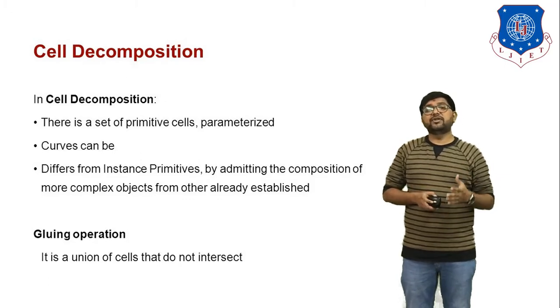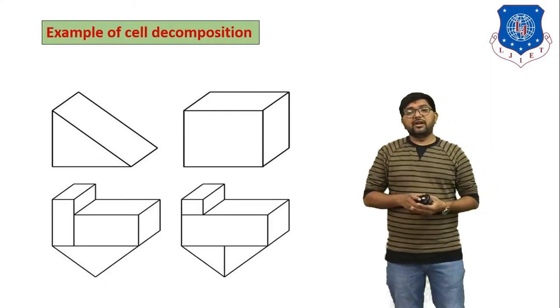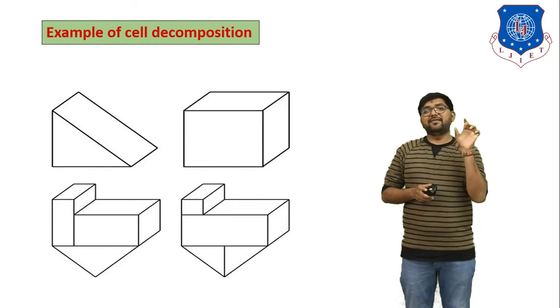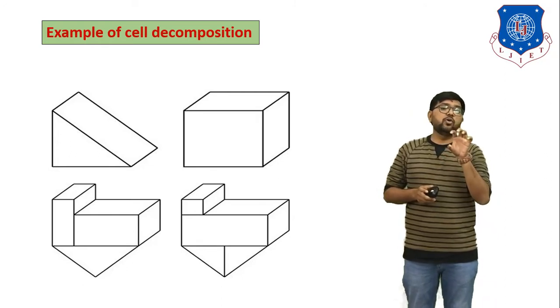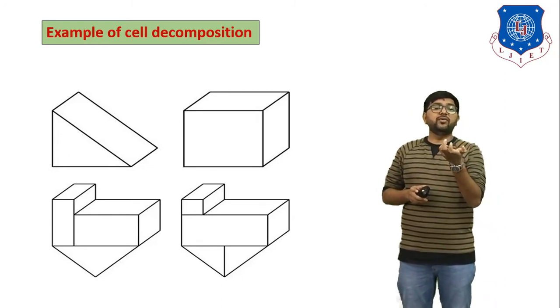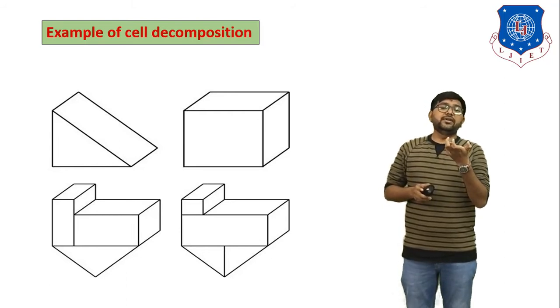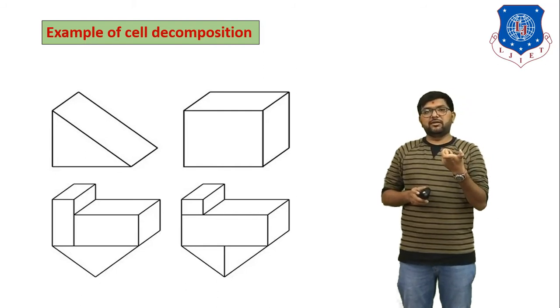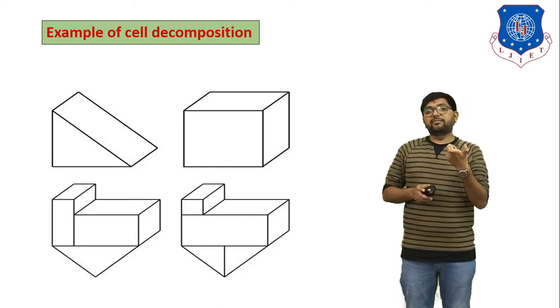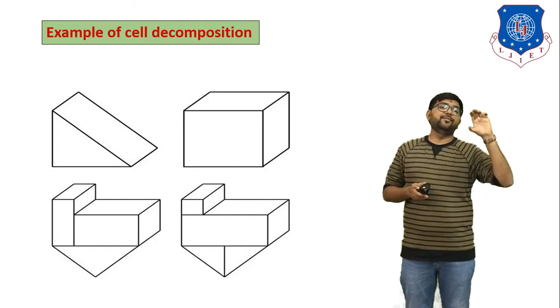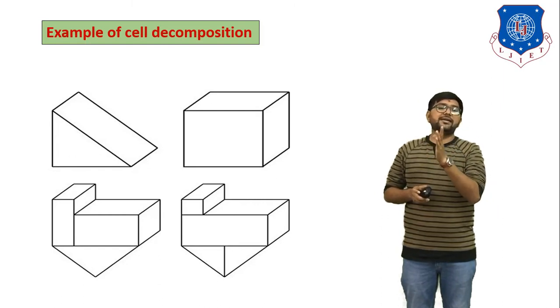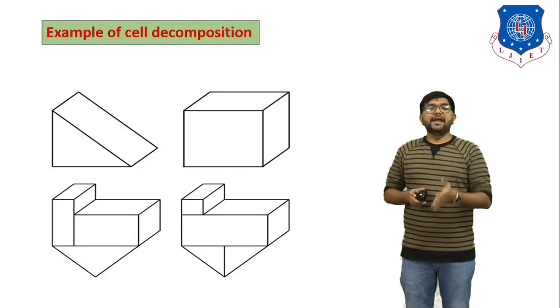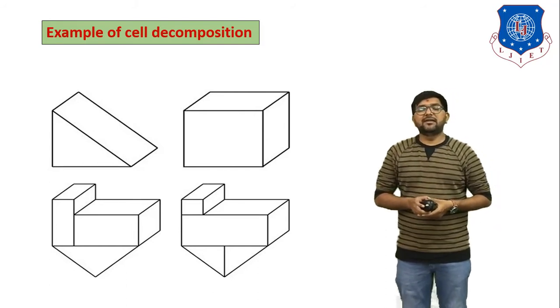In the example of cell decomposition, we have two objects: one type of prism and one type of cube. We combine these two objects. In the figures, you can see: first we place the prism below the cube, and in the second figure we divide the cube into parts and combine it with the prism. This is the example of cell decomposition.